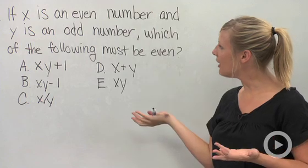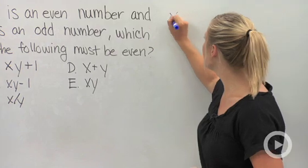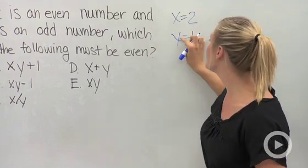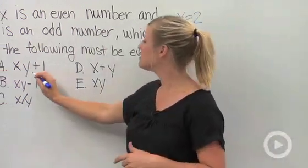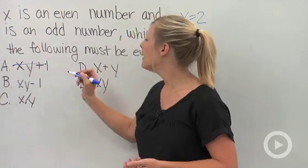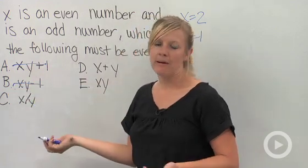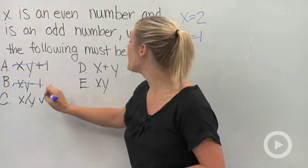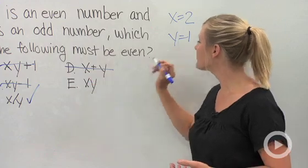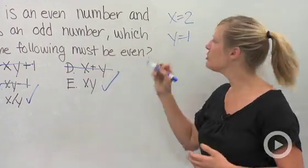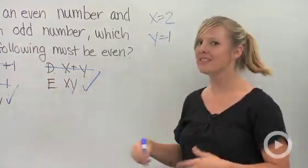If X is an even number and Y is an odd number, which of the following must be even? Well, let's pick a couple numbers and plug them in. Let's say that X is 2 and that Y is 1. No need to make really difficult numbers. And let's plug them in and see what happens. X plus Y is 2 plus 1. Is that even? Nope. Got to be crossed off. X times Y, 2 times 1 minus 1. Is that even? Nope. X divided by Y, 2 divided by 1. Is that even? Yeah, it's 2. Let's keep that for now. X plus Y, 2 plus 1, 3. Definitely odd. Last one. X times Y, 2 times 1. That works too.